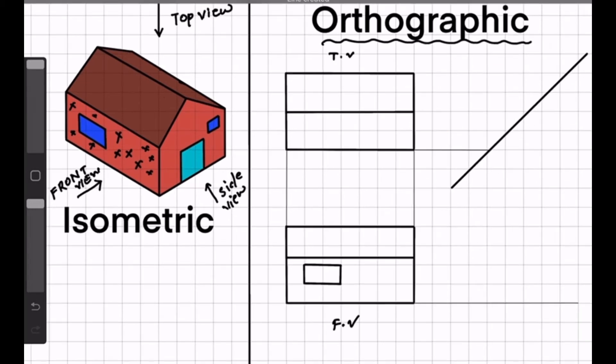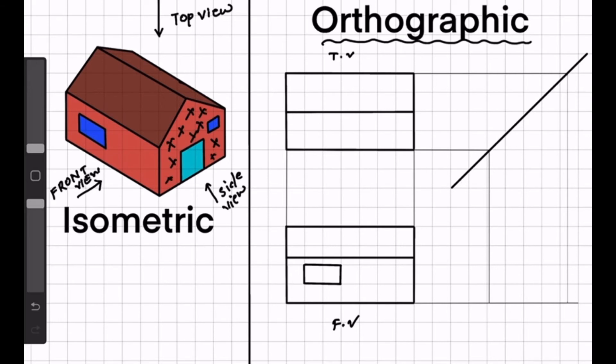Now draw a 45-degree angle line and draw some reference lines from the top view and front view. Now if I see this isometric house from the side, I can see this portion including the door and window. So it will be like this. Just draw the reference lines from the top view and front view.